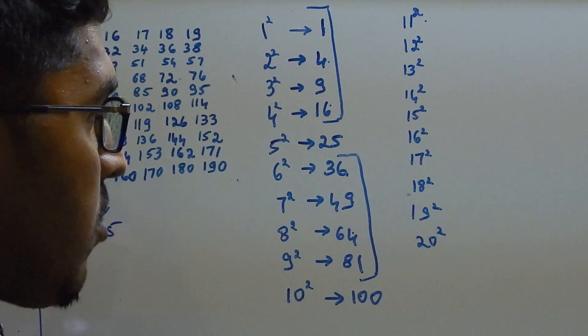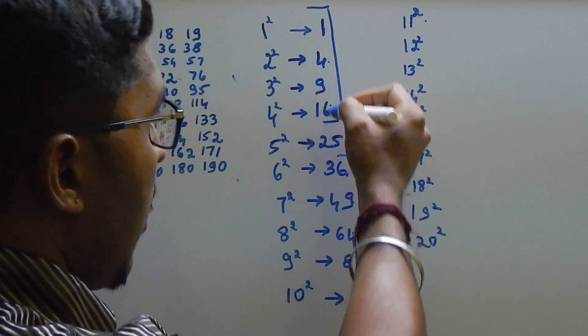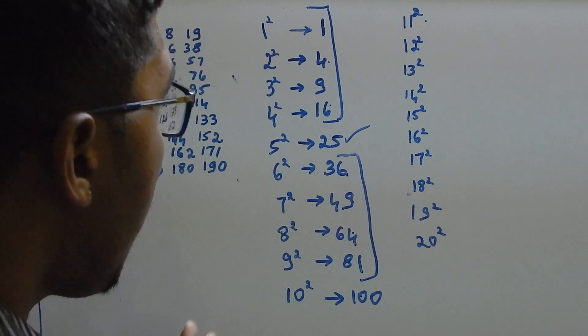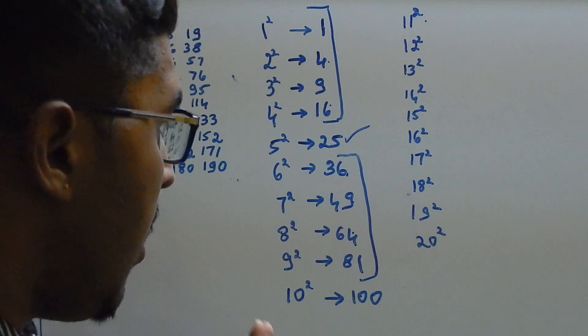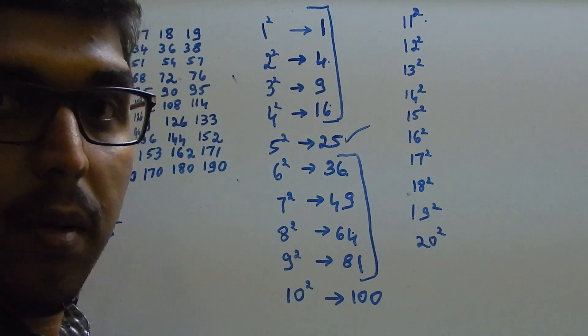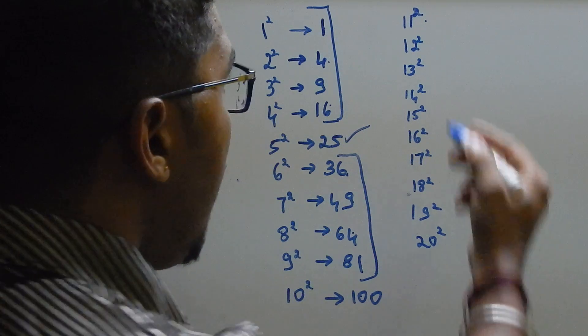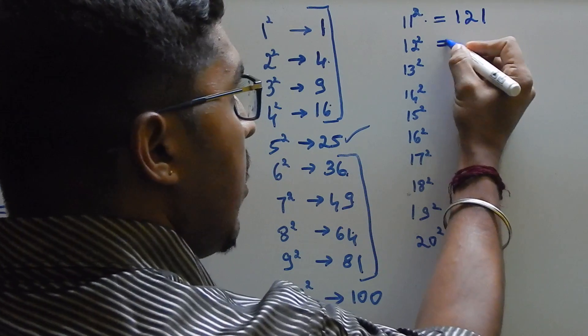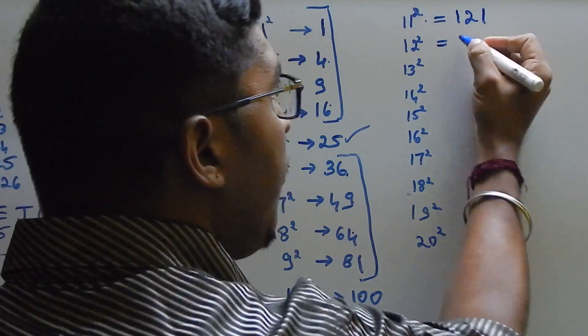Otherwise it is not a perfect square. Either it should be 1, 4, 9, 6 or 5 to be a perfect square, otherwise it will not be a perfect square. That is the tip what I am giving you. And here 11 square 121, 12 square 144.